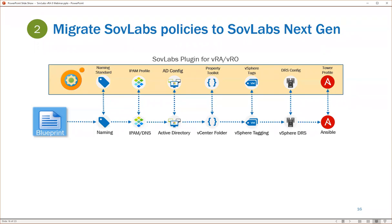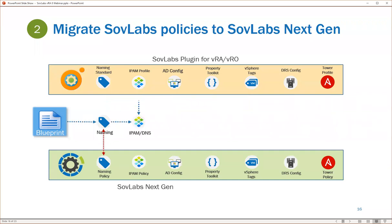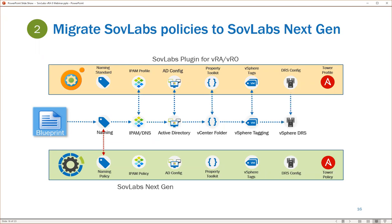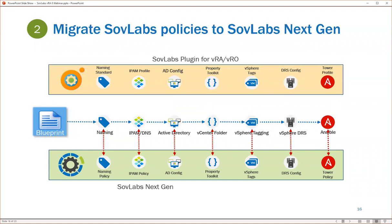When transitioning from VRA 7 into our SovLabs.next platform, moving these configurations and integrations out of VRA 7, we can do that in a very staged way without a massive lift and shift. Because we'll be able to run them both in the same environment, we could migrate naming over and not have to migrate everything at once. You can take these off in little chunks — move naming over to the new platform, then IPAM, then DNS, and right down the line, one by one, programmatically move your integrations over to our NextGen platform with very little disruption to your environment.